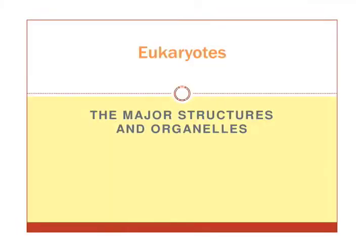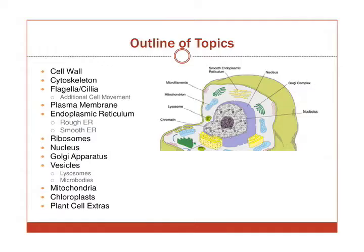Hello and welcome to myotherprofessor.com. I'm Zaina and today we are going to discuss eukaryotes and look at the major structures and organelles. The outline topics: first we will discuss the cell wall and the cytoskeleton, then some movement within the cell used by flagella and cilia.